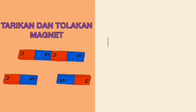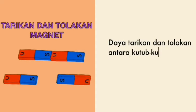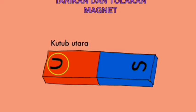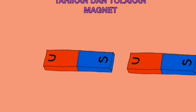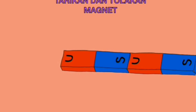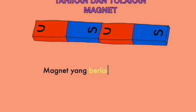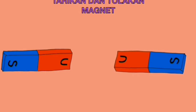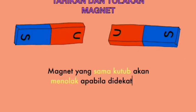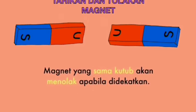Nah, anak-anak, seperti ini tarikan dan tolakan magnet yang akan terjadi. Kutub utara dan kutub selatan — kalau berbeda kutub, dia akan menyatu. Magnet yang berlainan kutub akan menarik apabila didekatkan. Magnet yang sama kutubnya akan menolak apabila didekatkan.